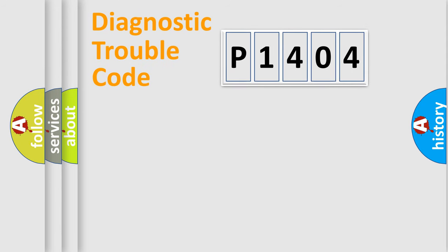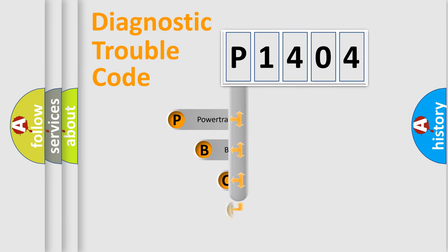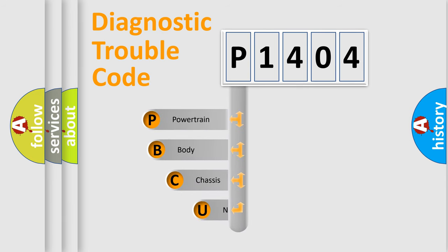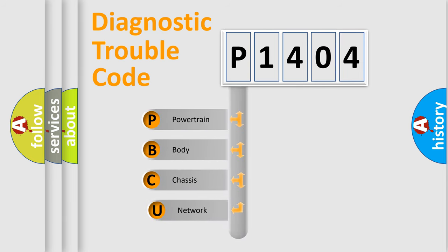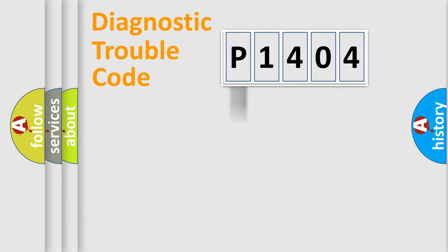First, let's look at the history of diagnostic fault code composition according to the OBD2 protocol, which is unified for all automakers since 2000. We divide the electric system of automobile into four basic units: Powertrain, Body, Chassis, and Network.